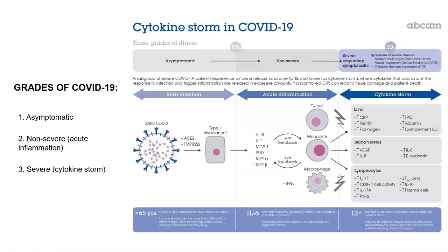We have three grades of COVID-19 infection: the asymptomatic, the non-severe, and the severe grades. About 80% of individuals actually have the asymptomatic and non-severe grades, while 20% have the severe grade. Different molecules, cells, and tissues are involved at different stages or different grades of disease.